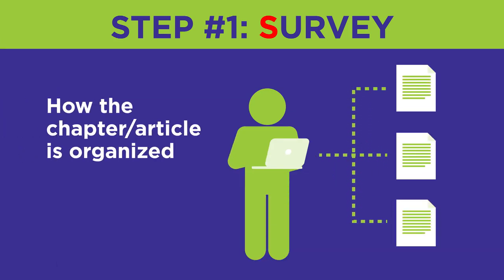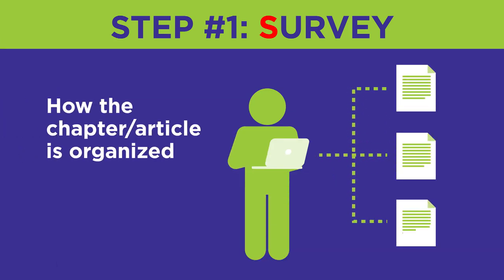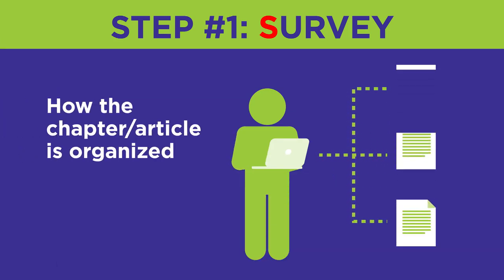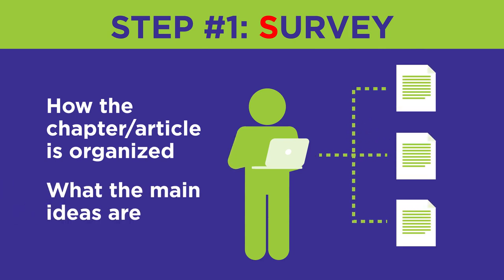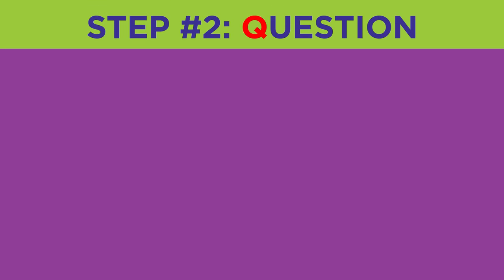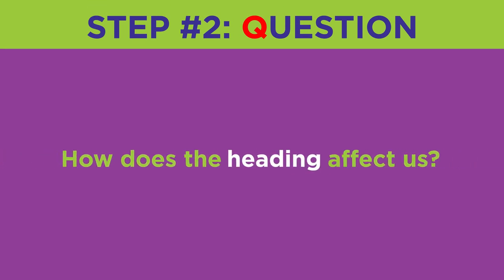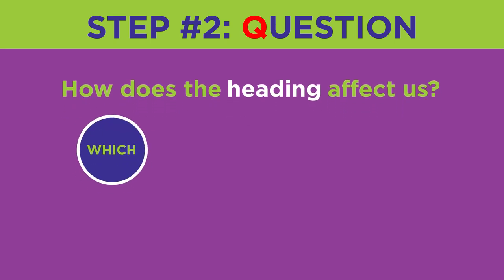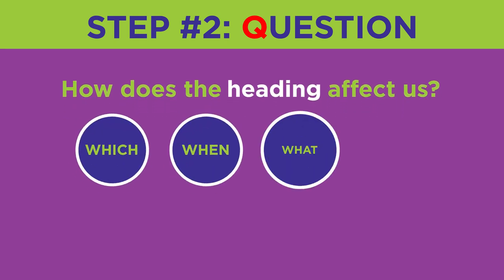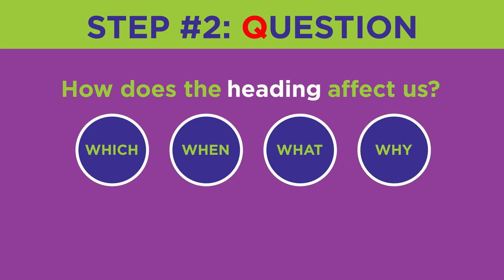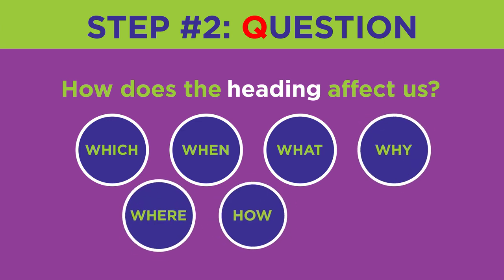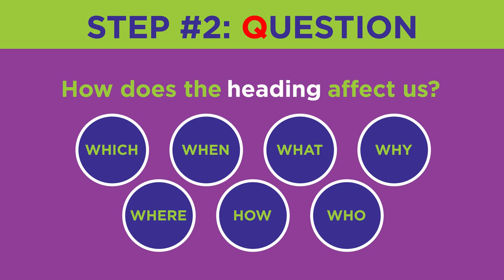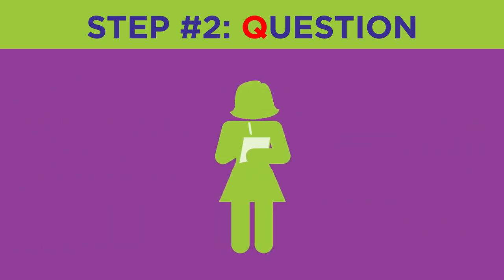Now you should have a general idea of how the chapter or article is organized and what the main ideas are. The second step is to turn each heading and subheading into a question. Use some of these question words to get started: which, when, what, why, where, how, and who. Write down your questions to refer to as you read the text.